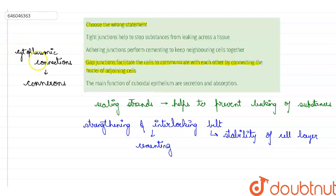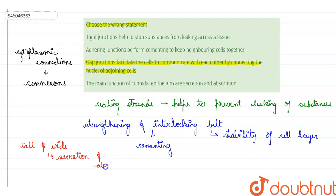The last statement says that the main function of cuboidal epithelium is secretion and absorption. Cuboidal epithelium consists of a single layer of cells that are as tall as they are wide. The most important function of simple cuboidal epithelium is secretion and absorption, and it is found in the collecting duct of the kidneys, the pancreas, and the salivary gland. So this statement is also correct.